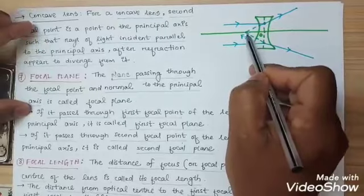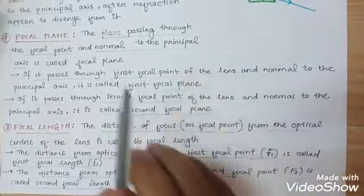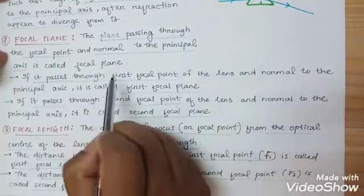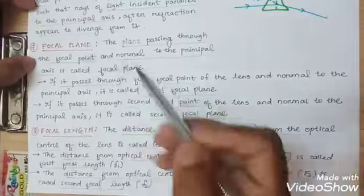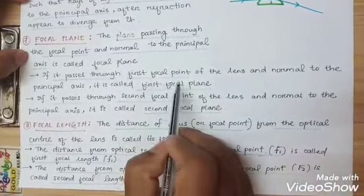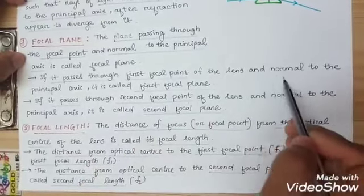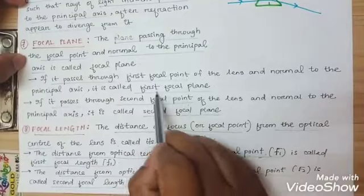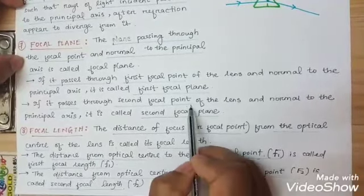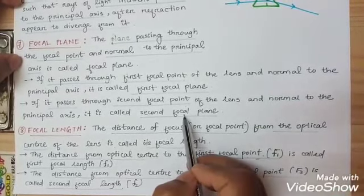Now come to focal plane. The plane passing through the focal point and normal to the principal axis is called the focal plane. There is a first focal plane — the plane passing through the first focal point of the lens and normal to the principal axis — and a second focal plane, which passes through the second focal point and is normal to the principal axis.